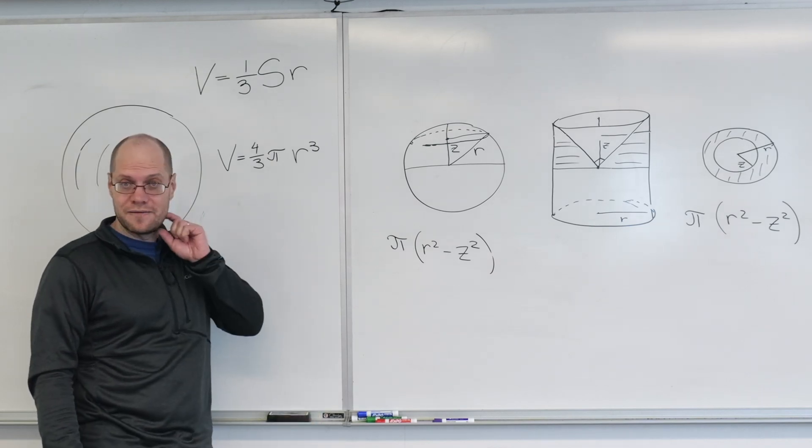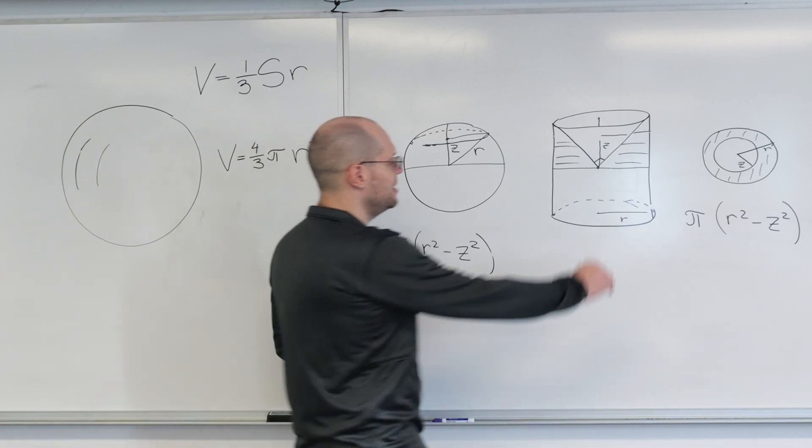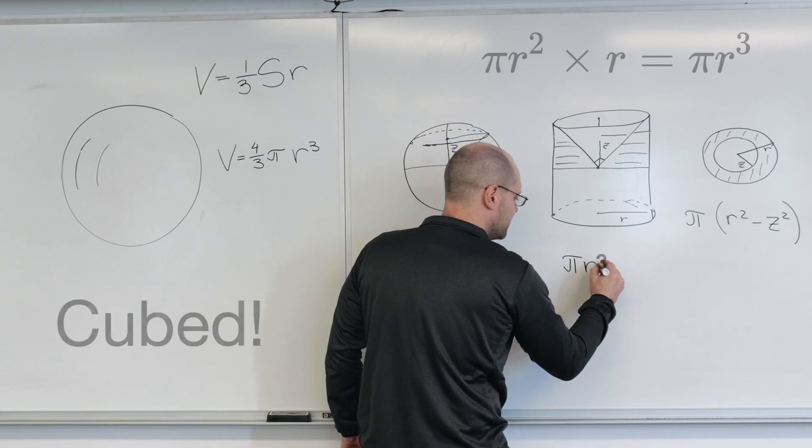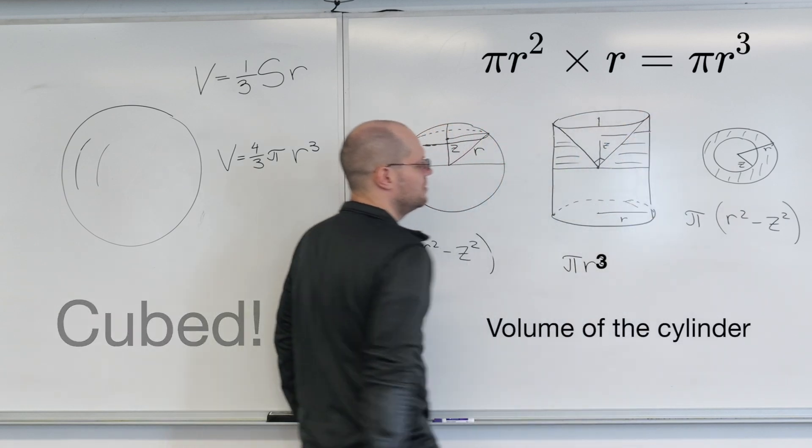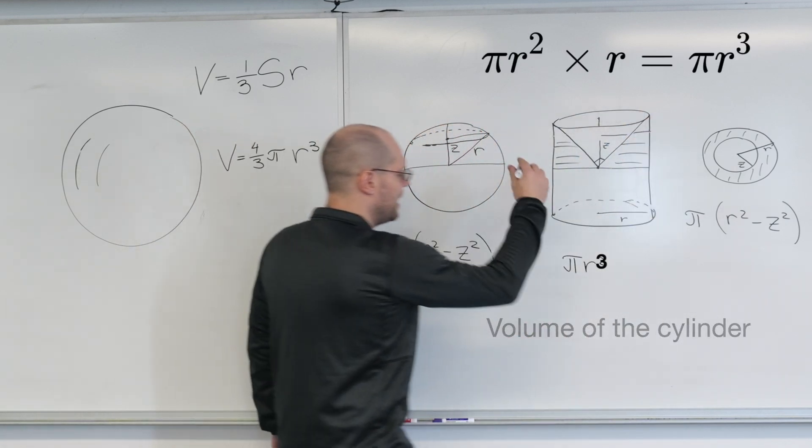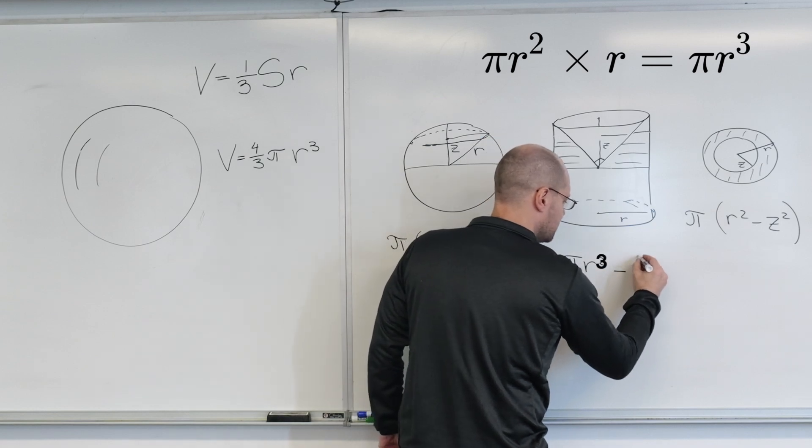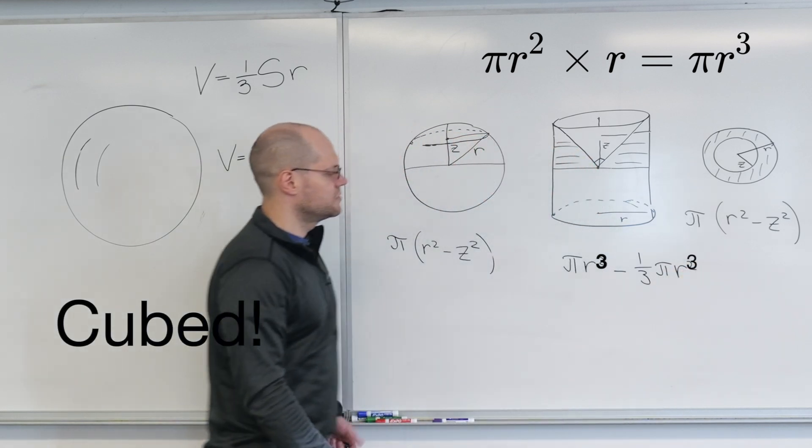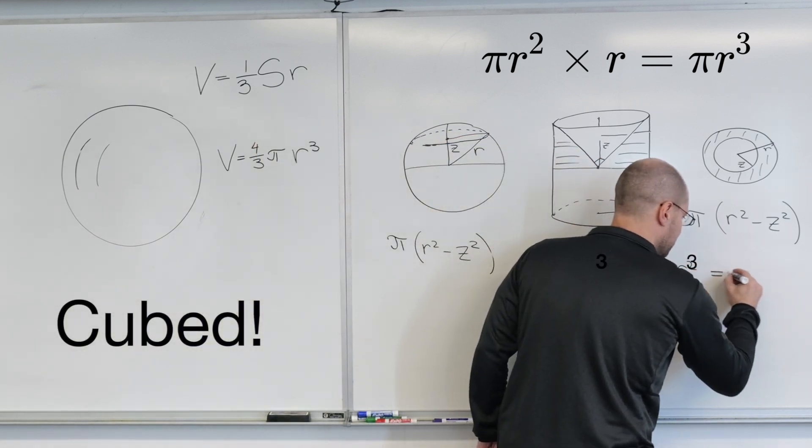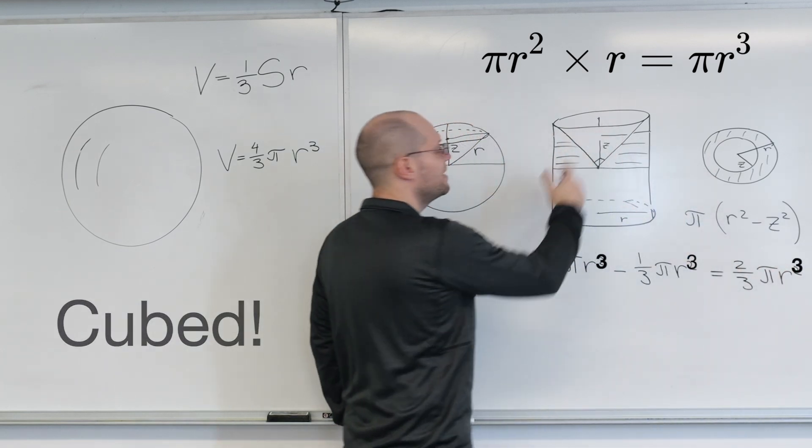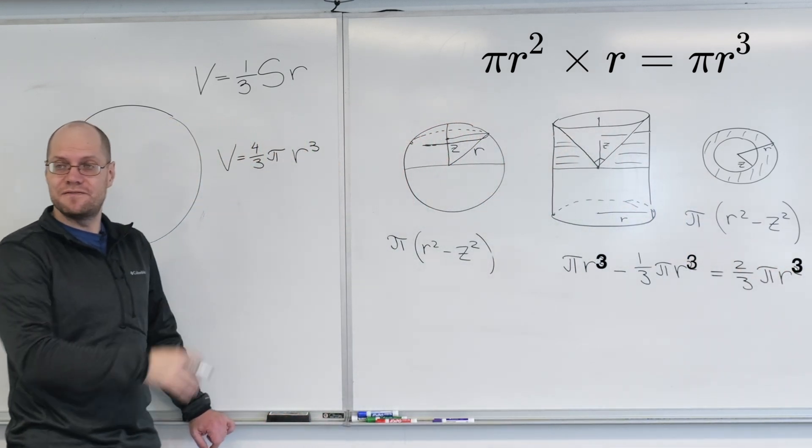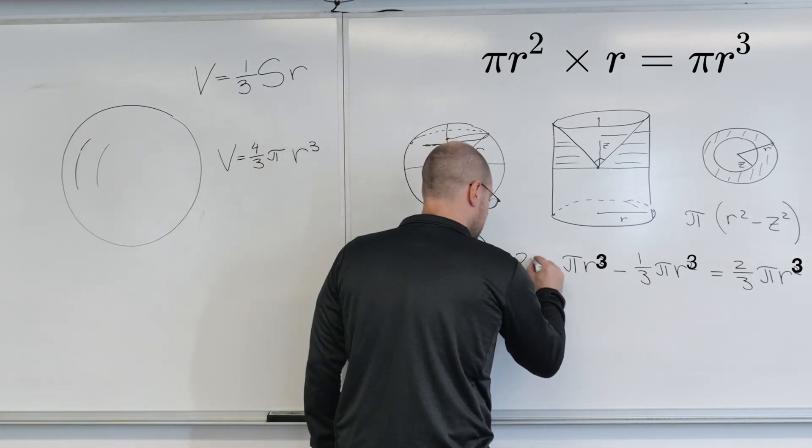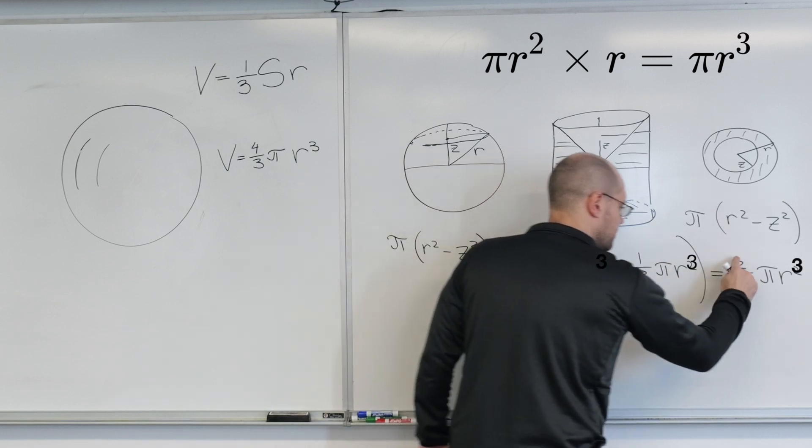What's the volume of this? The volume is πR² (the area of the circle) minus the cone which is one-third πR², so it becomes two-thirds πR². That's just half of the sphere and half of the cylinder. We want the whole thing, so multiply by two. This is four-thirds πR squared.